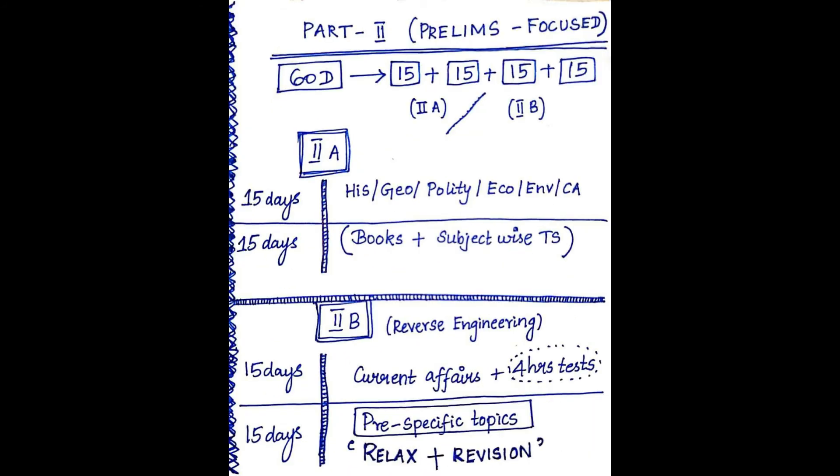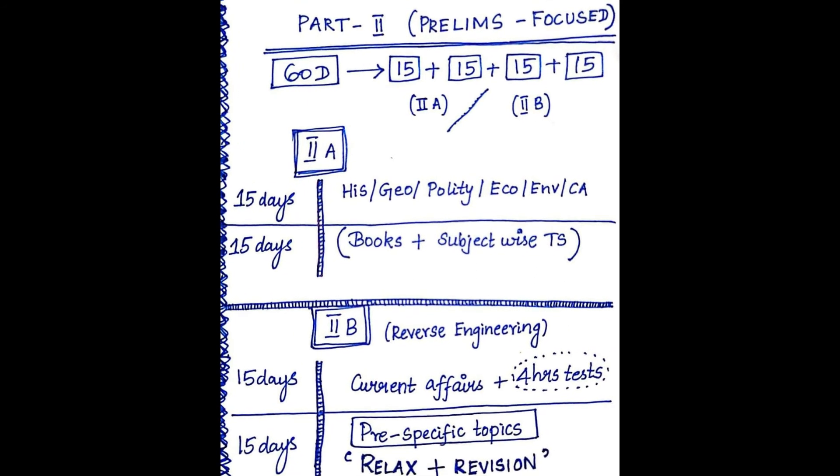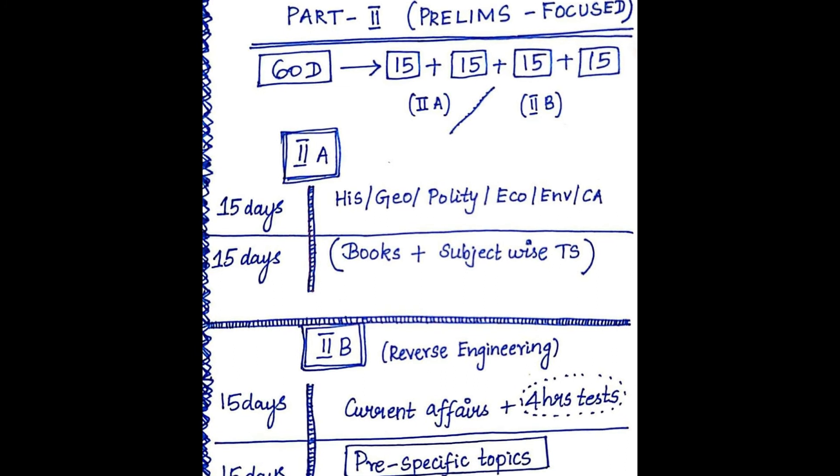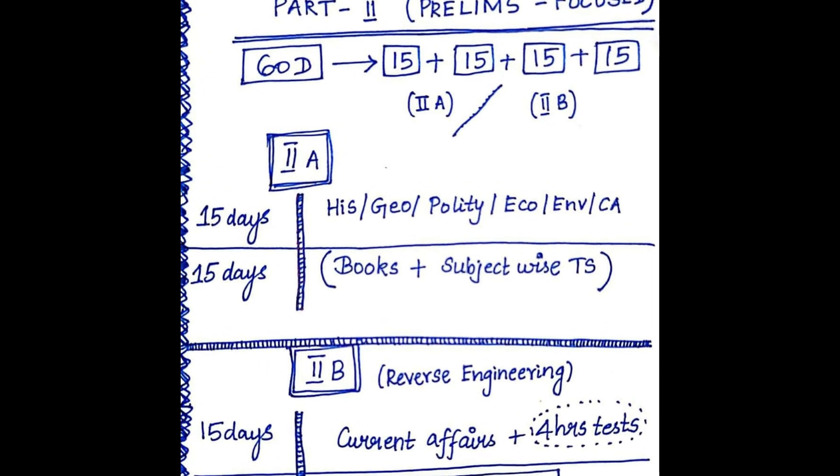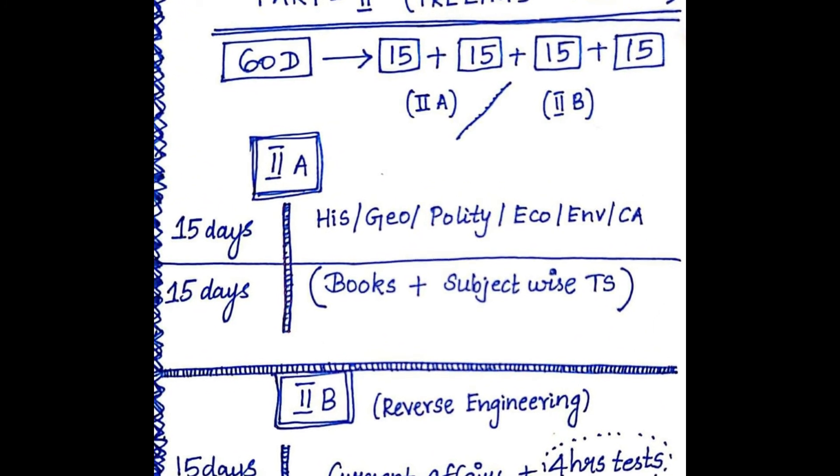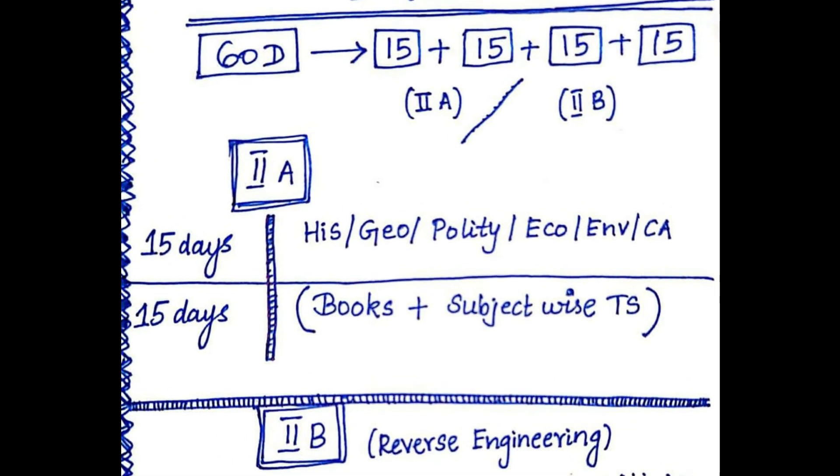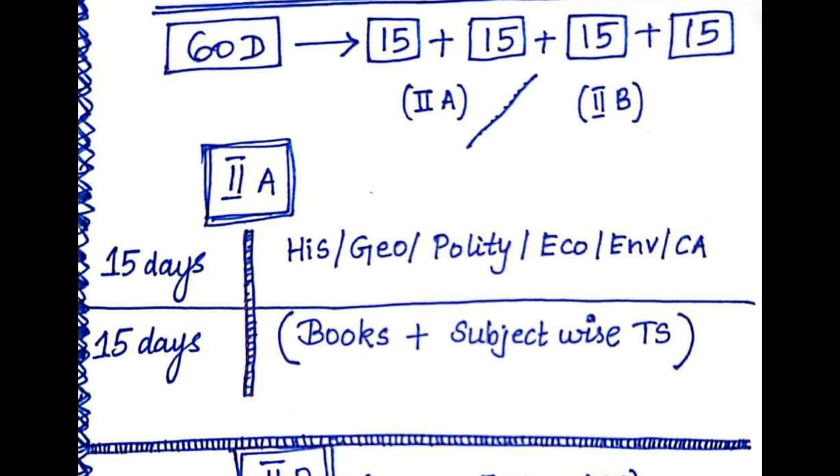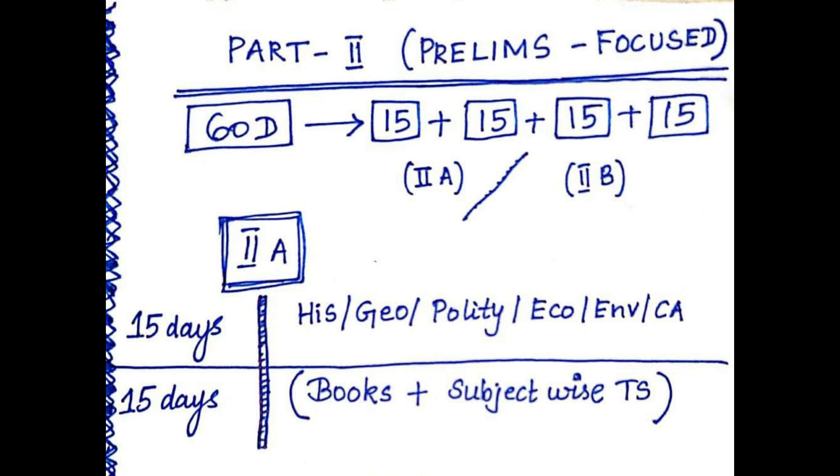Now, let us move on to the second part of our 120 days preparation which is prelims focused. So, in the upcoming 60 days, I would like you to divide it as 4 slots containing 15 days each. I will name the first two set as part 2A and the next as part 2B. In the first 30 days of the part 2 preparation, we will divide it as 15 days plus 15 days. Basically, the second 15 days cycle is just a repetition of the first cycle, so carefully observe this.